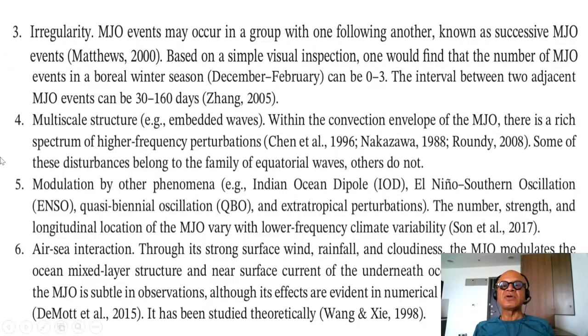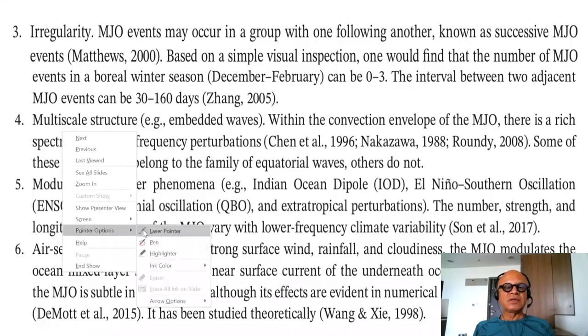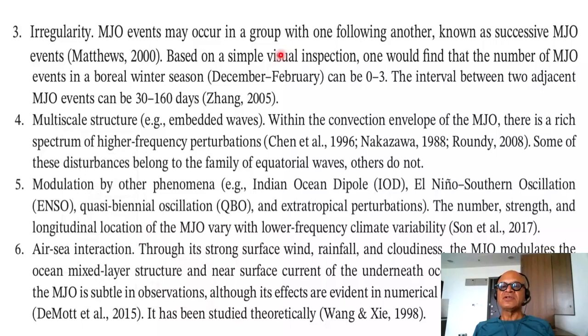Irregularity. MJO events may occur in a group, with one following another known as successive MJO events. Based on a simple visual inspection, one would find that the number of MJO events in a boreal winter season can be 0 to 3 on average. The interval between two adjacent MJO events can be 30 to 160 days. The multi-scale structures. So embedded waves. We talked about the large-scale eastward propagating convective complex with backward tilting eastward propagating features and at different frequencies. Within the convection envelope of the MJO, there is a rich spectrum of high energy perturbations. Some of these disturbances belong to the family of equatorial waves and others do not.